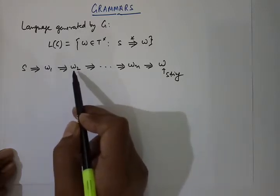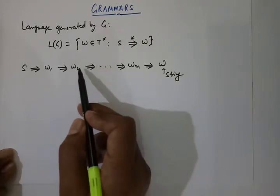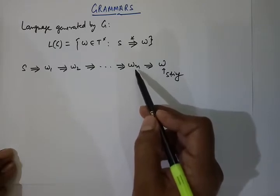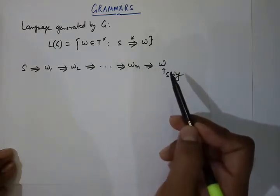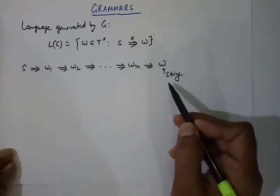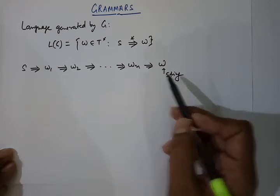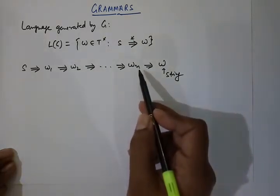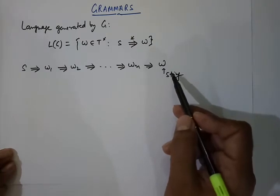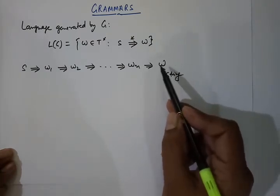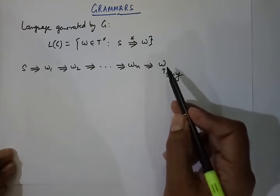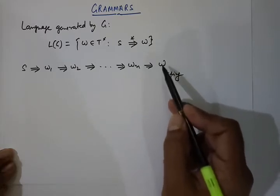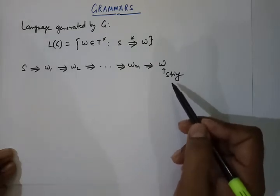We apply the production rule to W1 to get W2, then to W2 to get W3, and so on up to WN. Up to WN it is a sentential form, meaning at least one variable is present. W is a string or sentence when all variables are replaced by either null or any terminal symbol, so W cannot go further.